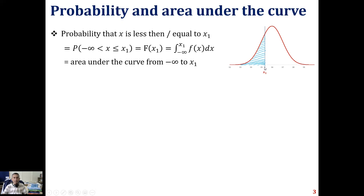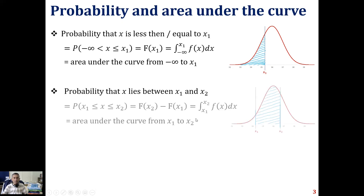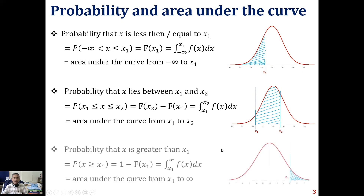The blue shaded region to the left of x1 is the area under the curve from minus infinity to x1. Similarly, the probability that x lies between x1 and x2 is the area under the curve between x1 and x2. The probability that x is greater than x1 is P(x ≥ x1) = 1 minus F(x1), because the area under the entire normal distribution curve equals 1. This is indicated by the blue shaded region to the right of x1.